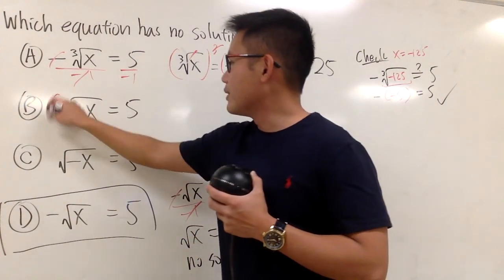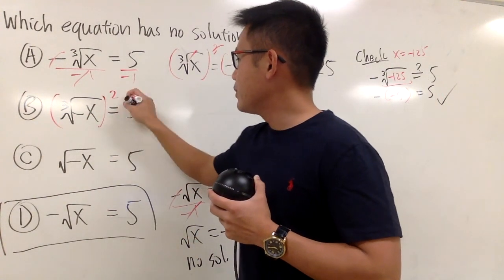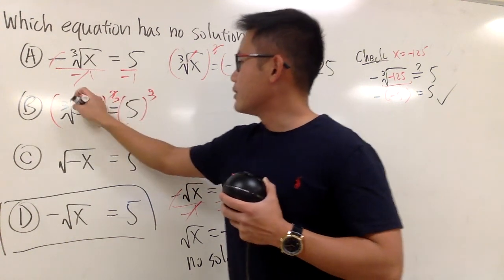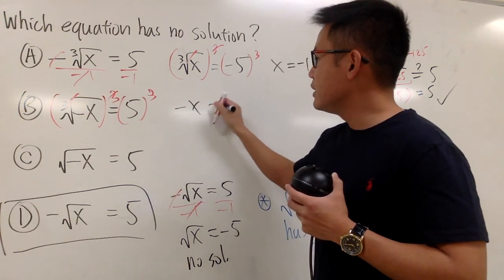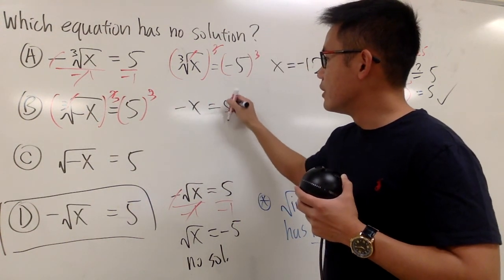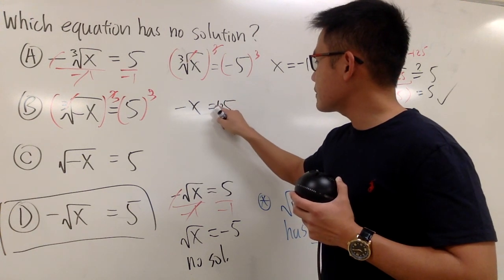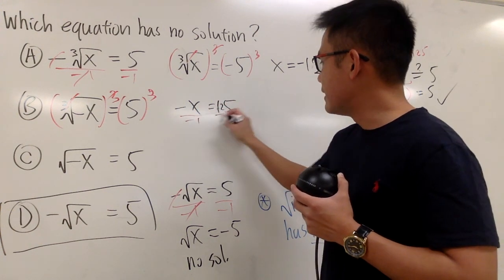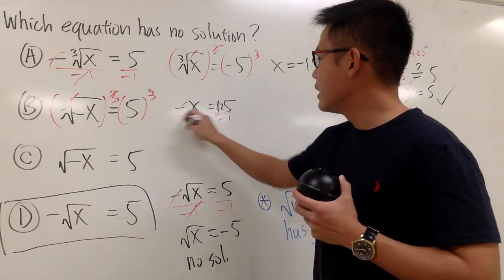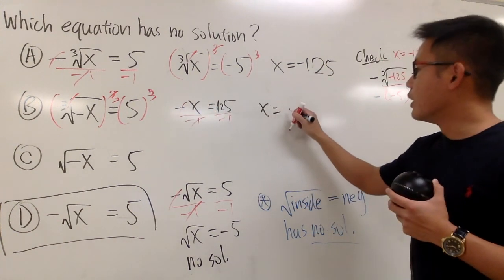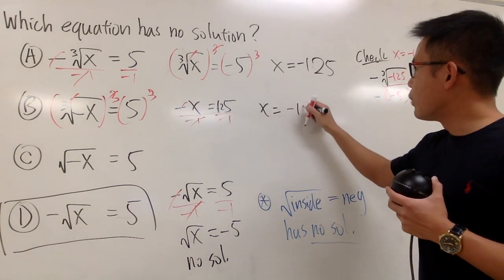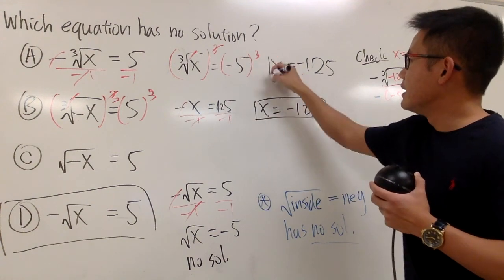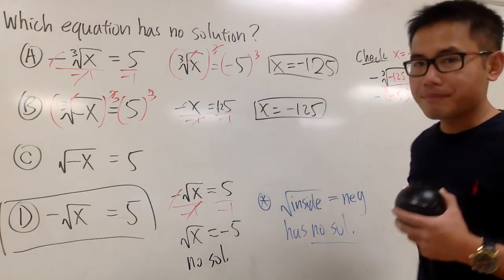For the second one, you can do the same — cube both sides. Cancel this out, and you have negative x equals 125. Divide both sides by negative 1, and you get x equals negative 125 as well. In fact, they are the same answers.